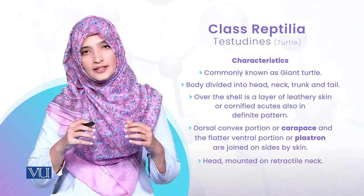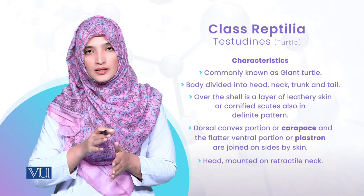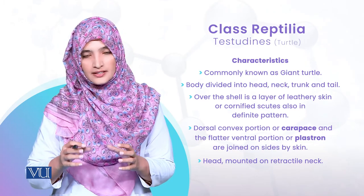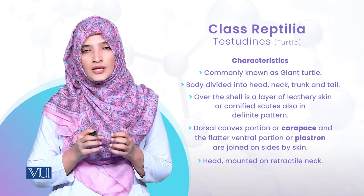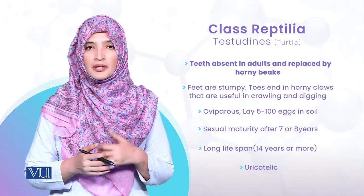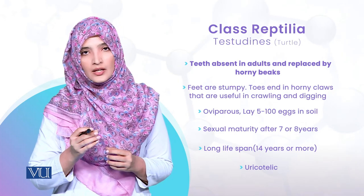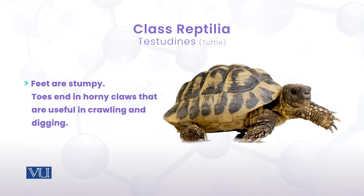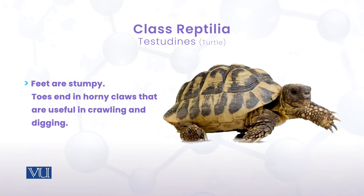ان دونوں shells کے اندر سے four limbs articulated ہوتی ہیں۔ Neck بھی shell کے اندر retract ہو سکتی ہے — جب کوئی threat ہو تو یہ shell کے اندر اپنے آپ کو بند کر لیتے ہیں۔ Turtles میں teeth absent ہوتے ہیں لیکن mouth part pointed اور hard ہوتا ہے۔ ان کے stumpy feet ہوتے ہیں اور toes horny claws میں ختم ہوتے ہیں جو crawling اور digging میں useful ہیں۔